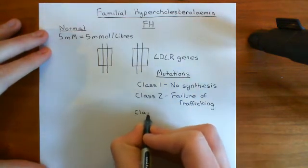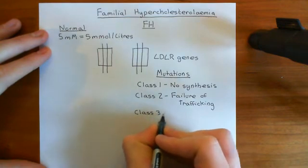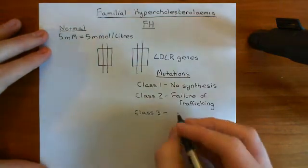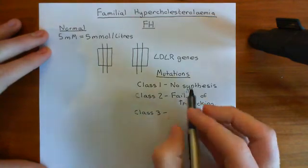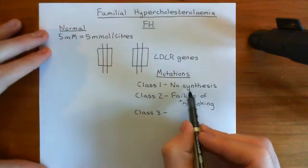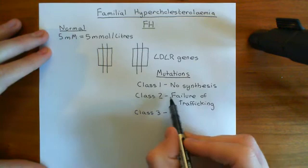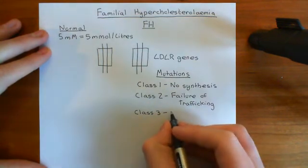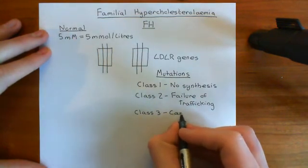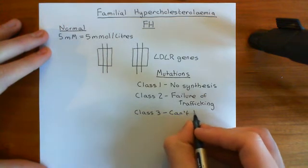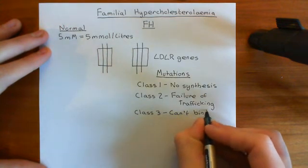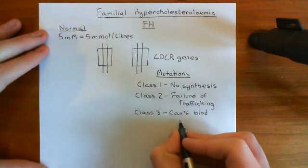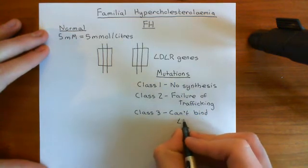In class 3 mutations, it does get to the membrane — you synthesize it, it gets into the rough endoplasmic reticulum, it then does traffic to the plasma membrane successfully, but then it can't bind LDL. So it's pretty useless. There's some problem with the LDL receptor type A repeat domain, so it can't bind LDL.